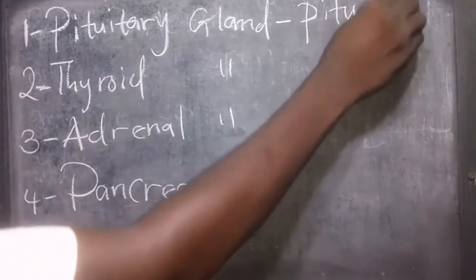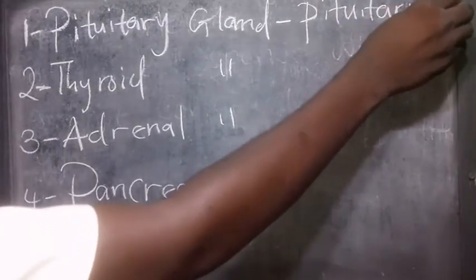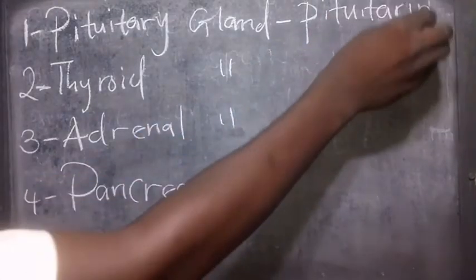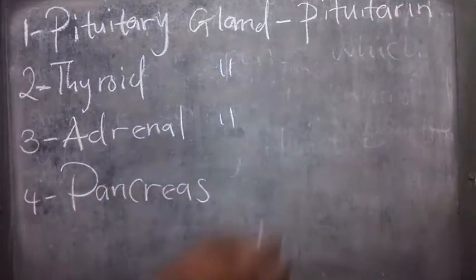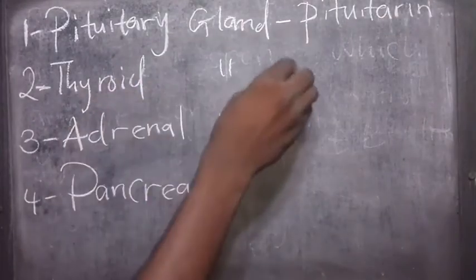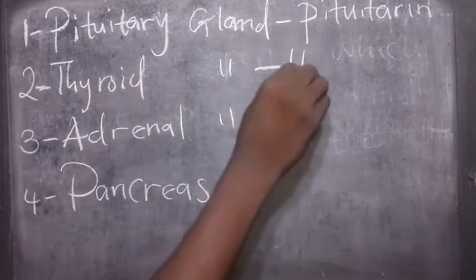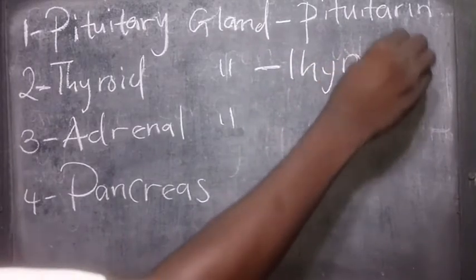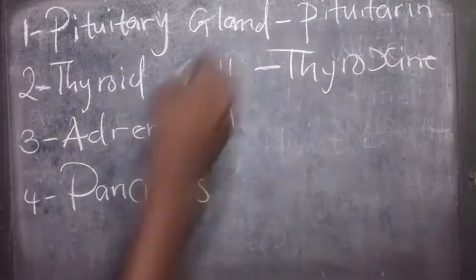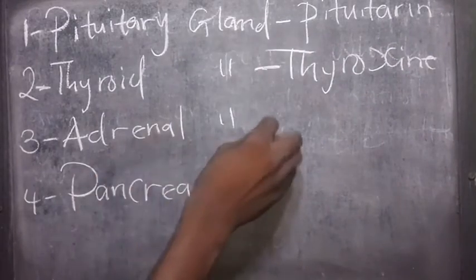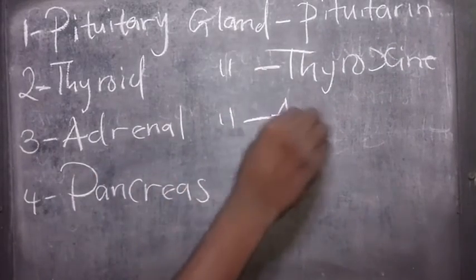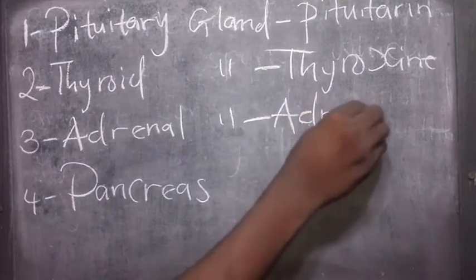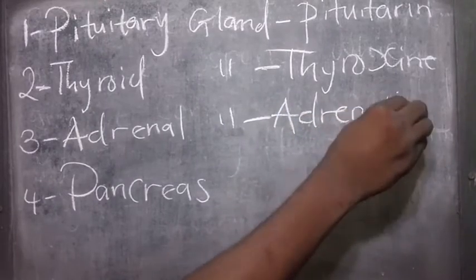Pituitary, that is it produces pituitary hormone. Thyroid produces thyroxine. Then adrenal produces adrenalin.